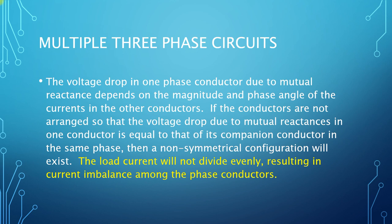If the conductors are not arranged so that the mutual reactances are equal, the conductors form a non-symmetrical configuration. In a non-symmetrical configuration, the load current will not divide equally between the parallel circuits, and this results in current unbalance among the phase conductors.